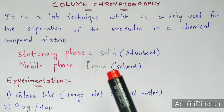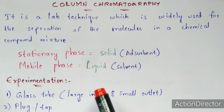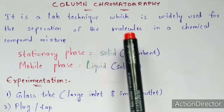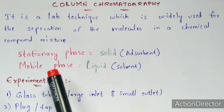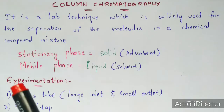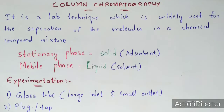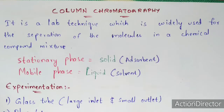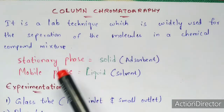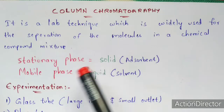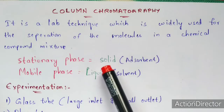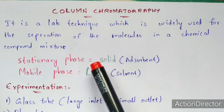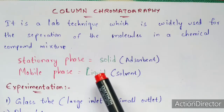Column chromatography is a lab technique mainly used for the separation of molecules in a chemical compound mixture. The stationary phase and mobile phase are common in every chromatography technique, but what we use for each will differ. Here, the stationary phase is in solid form and the mobile phase is in liquid form.